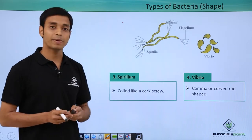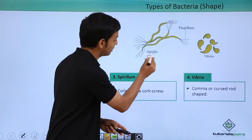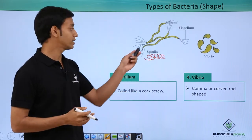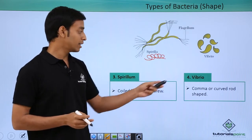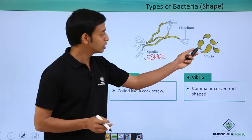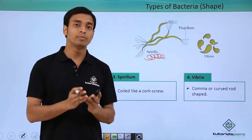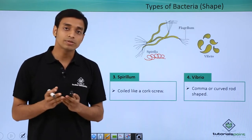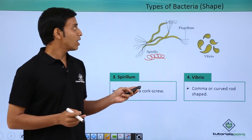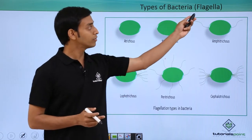The third type based on shape is spirillum — they can be coiled or corkscrew-like with spiral structures, as you can see in this picture. The fourth type is vibrio, which are mostly comma or curved shaped. A very common example is Vibrio cholerae, which is responsible for the disease cholera.